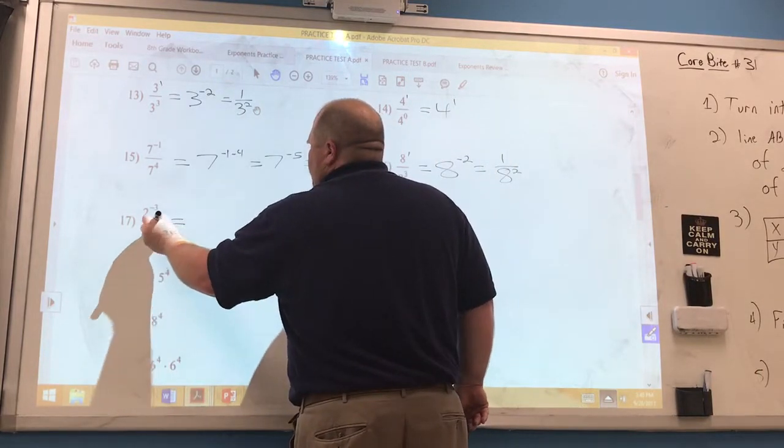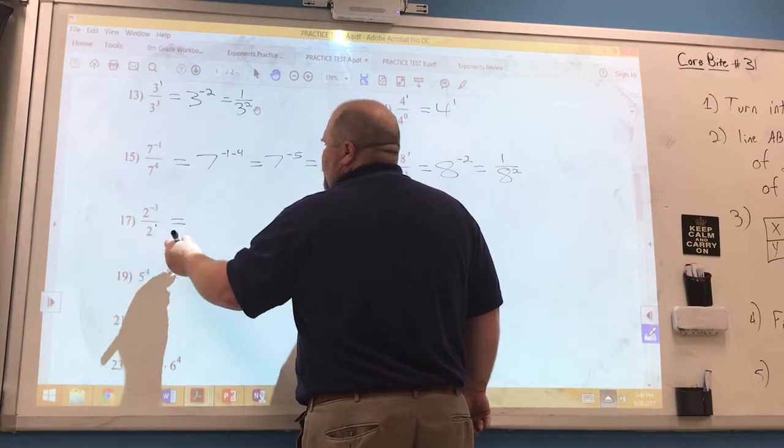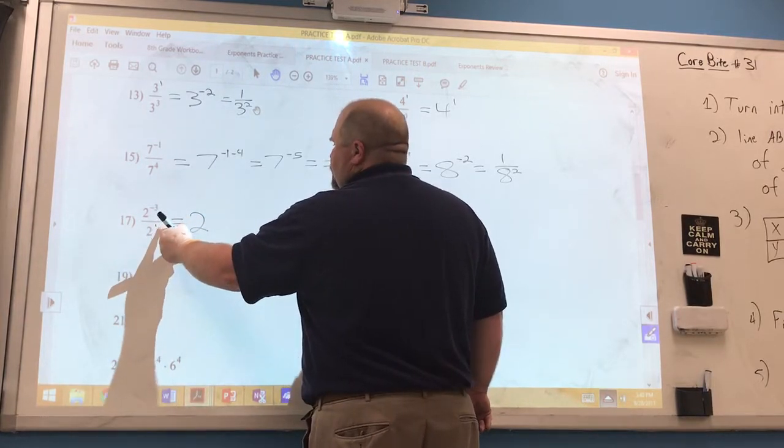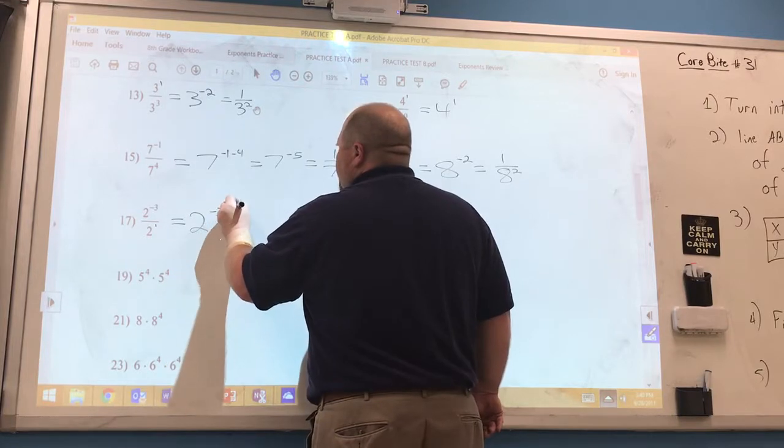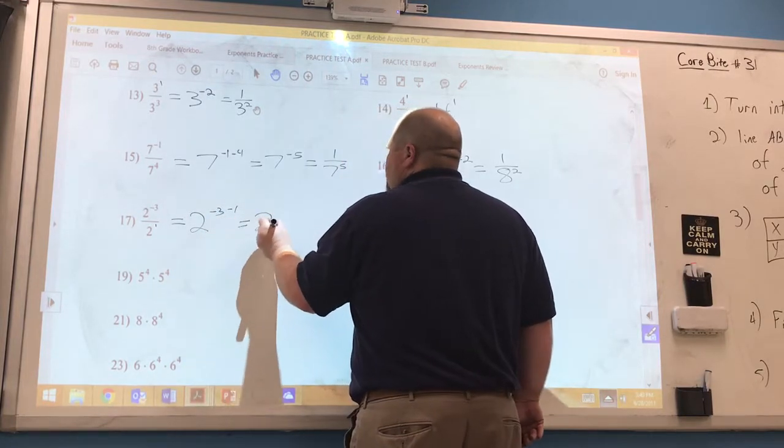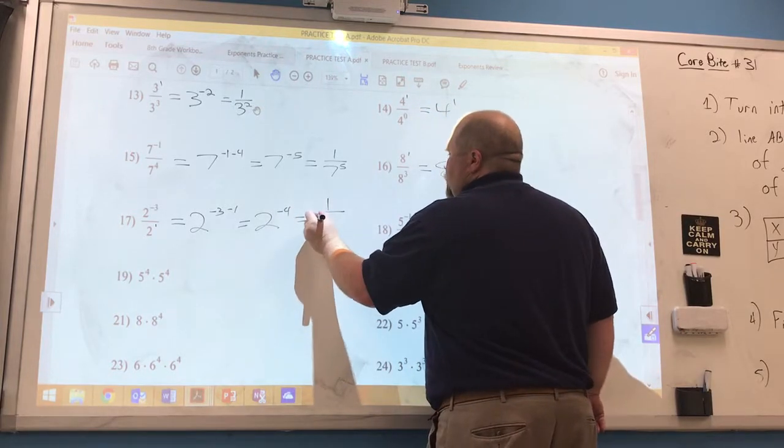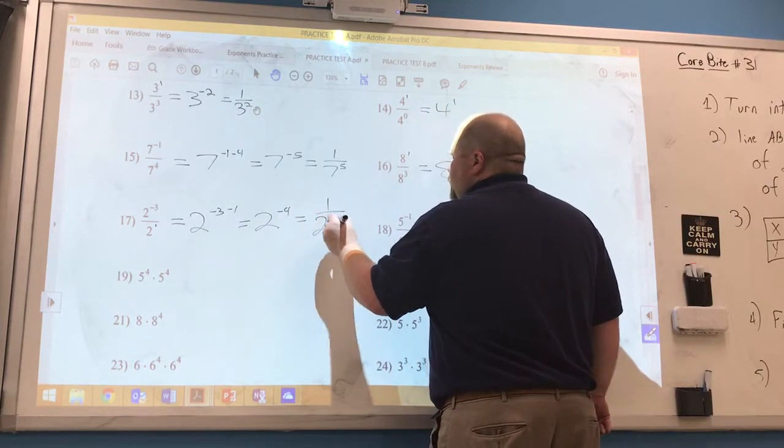17, we have an understood 1 here in the denominator. We have a base of 2. This is going to be negative 3 minus 1, which is 2 to the negative 4 power, which means it's going to be 1 over 2 to the 4th.